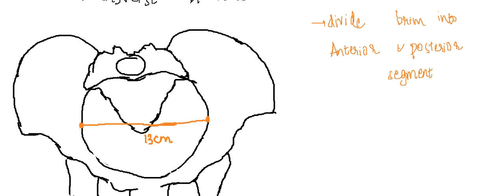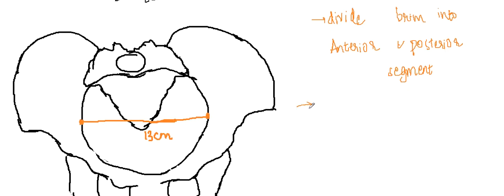This diameter is called the obstetrical transverse, because this is the diameter through which the fetal head has to negotiate. It is described as a diameter which bisects the anteroposterior diameter in the midline. Thus, the obstetrical transverse is equal to or less than the anatomical transverse. This is called the obstetric transverse because the head has to negotiate through this diameter.